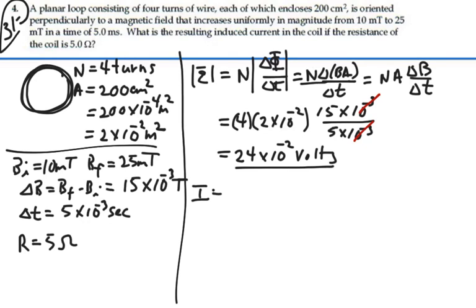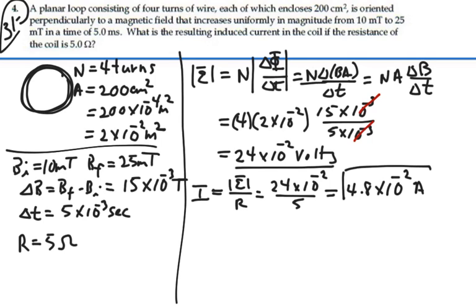The magnitude of our current will be equal to the EMF divided by the resistance. 24 times 10 to the minus 2 divided by 5 ohms is going to give us 4.8 times 10 to the minus 2 amps, which will be our induced current.